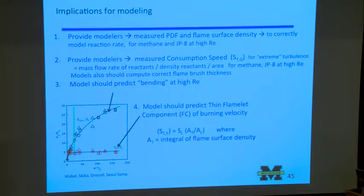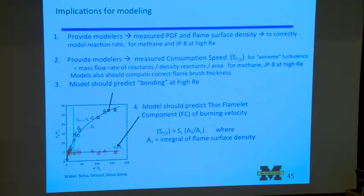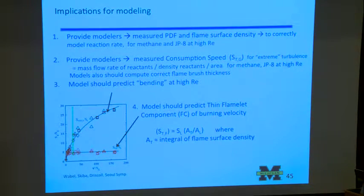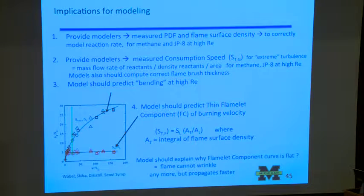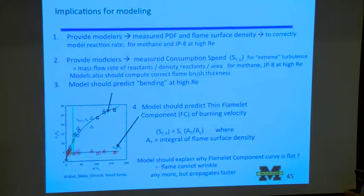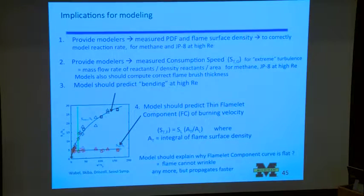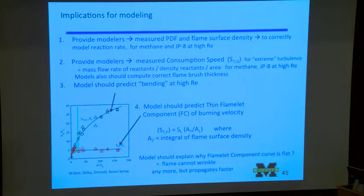So we need to redo a lot of this and do it right. And then we need to see if the models can predict the bending of the curve and if they can also predict the surface area. And does the model predict what we measure? And that is that the surface area stops going up with turbulence level, but the burning velocity keeps going up and we don't understand that. Why is the curve flat? The flame cannot wrinkle anymore, but it propagates faster. Clearly, it's getting thicker. As I showed you, the preheat zone is getting really thick. So it looks like Damkohler was right in his second postulate.